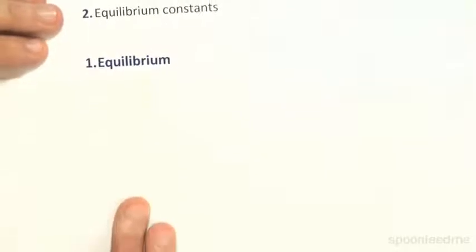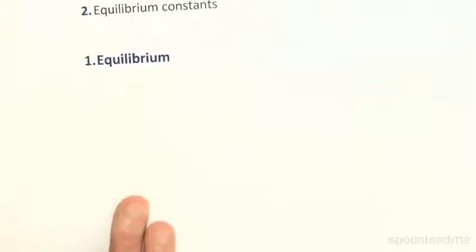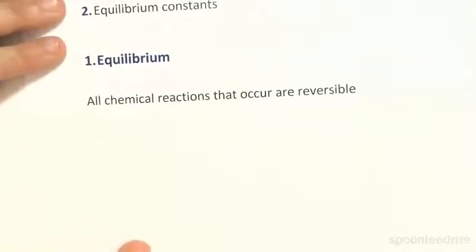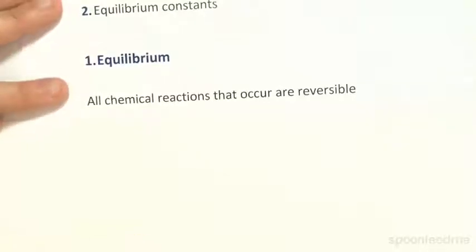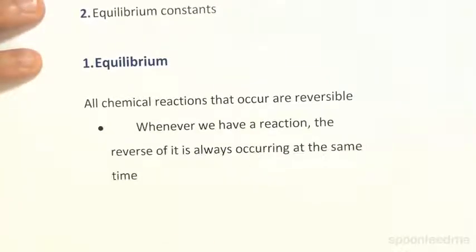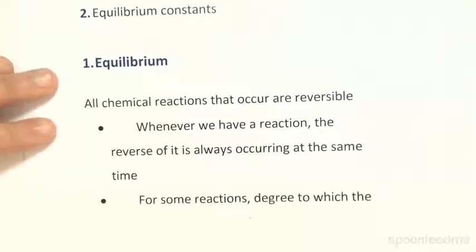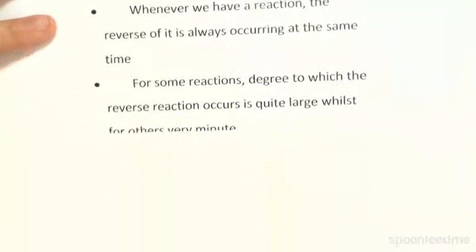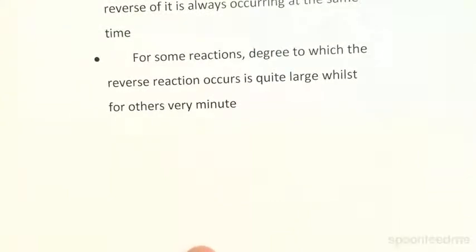So what is equilibrium? All chemical reactions are reversible — this is a really important point. All chemical reactions that occur are reversible. Whenever we have a reaction, the reverse event is always occurring at the same time to some extent. For some reactions, the degree to which the reverse reaction occurs is really quite large, whilst for others it's very minute — very small.